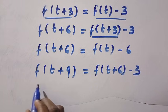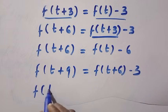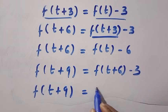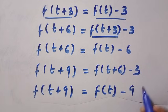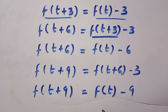So by replacing it, we have f of t plus 9 equals f of t minus 9. So this looks like we have a particular pattern.